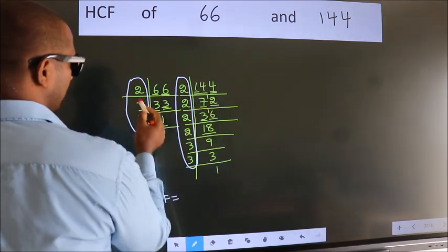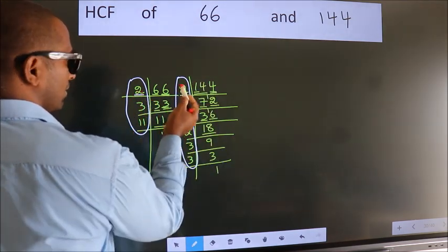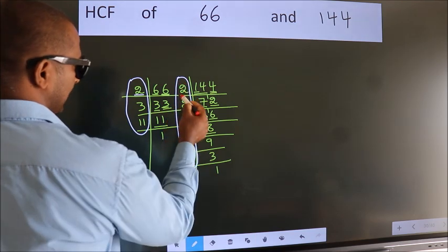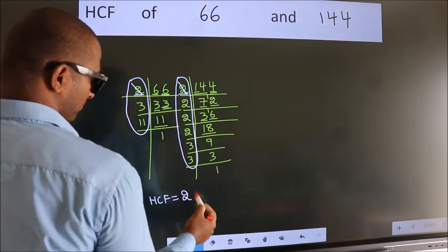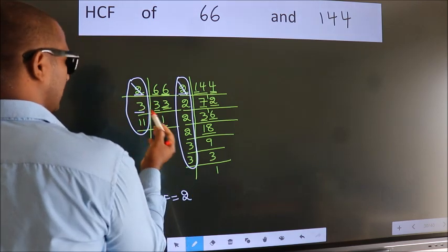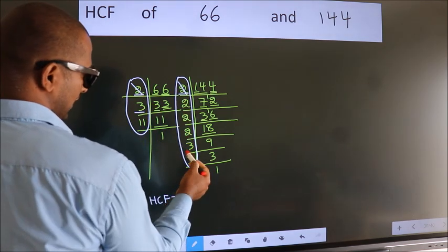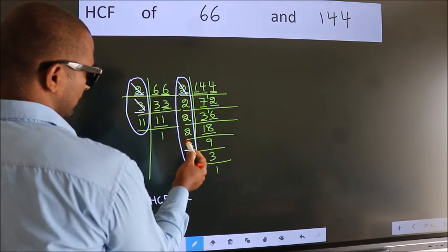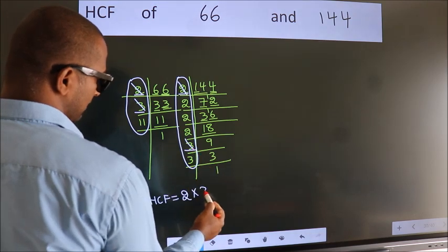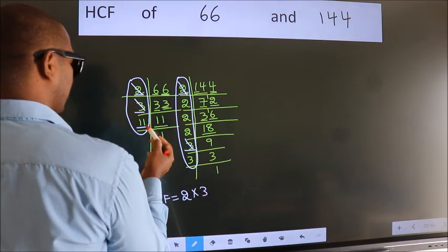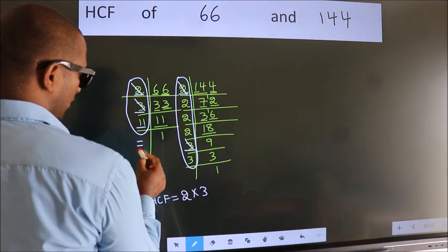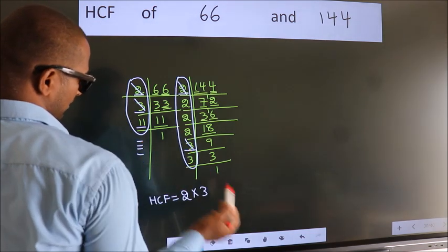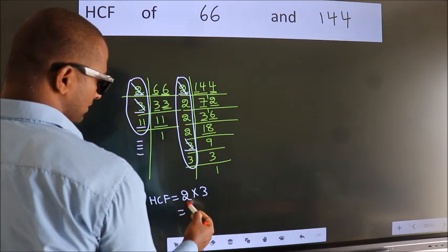Starting with the number 2, do we have 2 here? Yes. So cut 2 right here. Next number 3, do we have 3 here? Yes. So cut 3 right here. Next number 11, do we have 11 here? No. No more numbers have been left out. So our HCF is 2 into 3, 6 is our HCF.